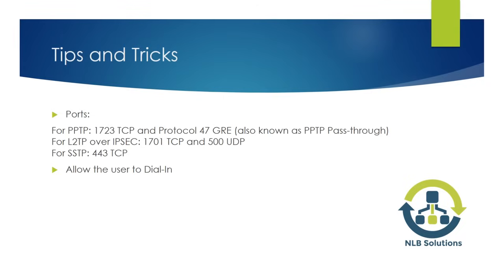In my case I'm going to use the PPTP protocol, which requires port 1723 TCP and protocol 47, the GRE. I've seen a lot of issues with the GRE protocol — a lot of internet providers are blocking this pass-through. So if you have problems connecting to your VPN server from home, check if your ISP is blocking it. Also, in order to connect to the VPN server, your administrator needs to provide the needed permissions to perform a dial-in.